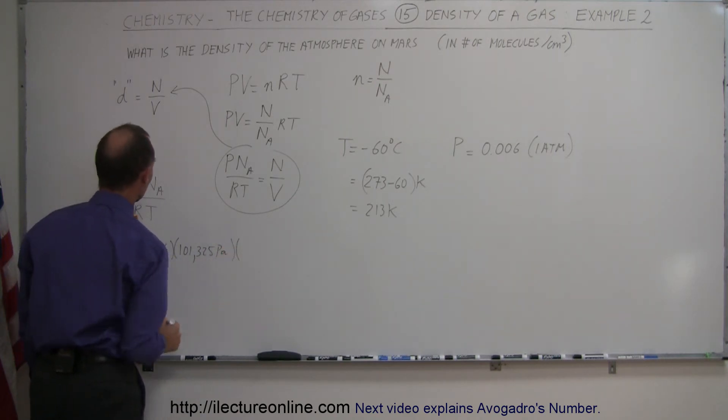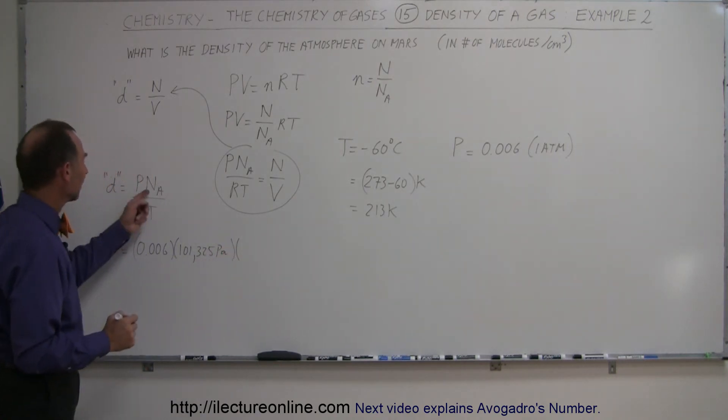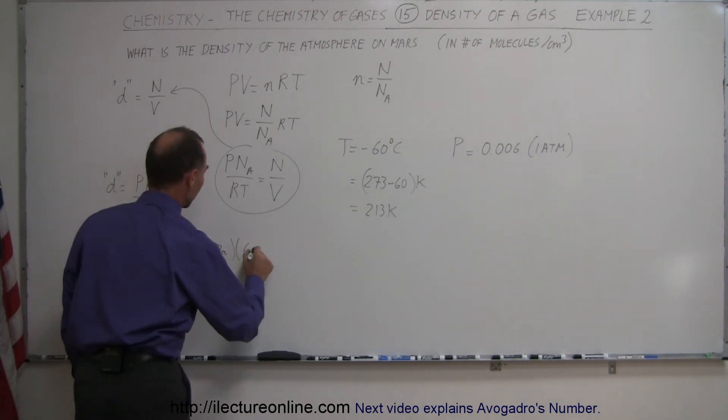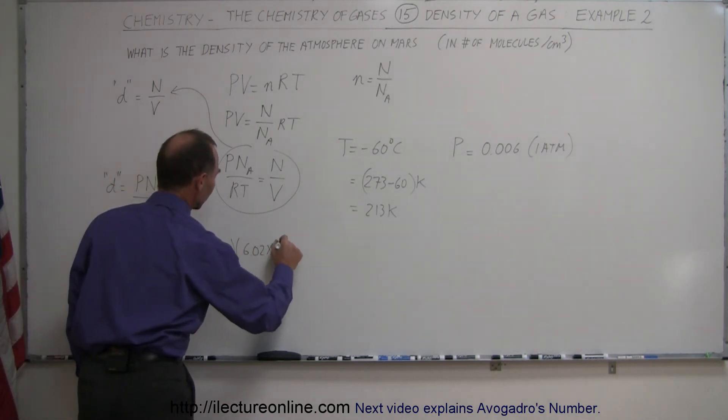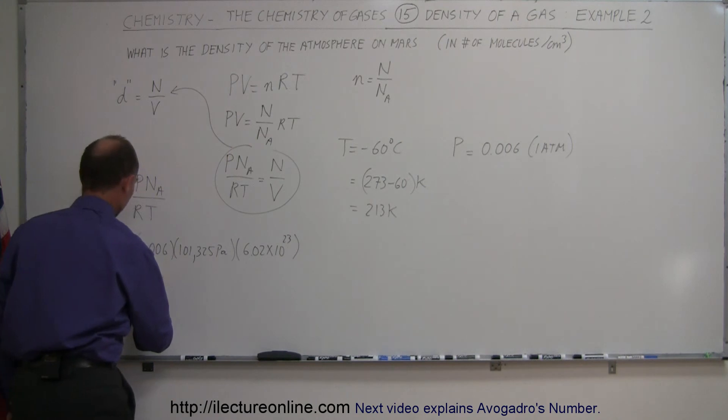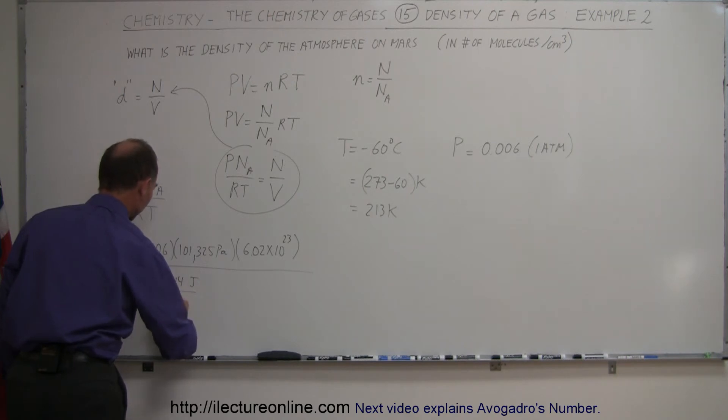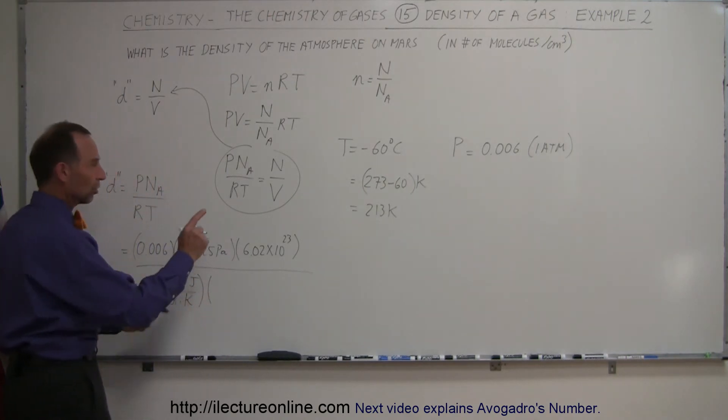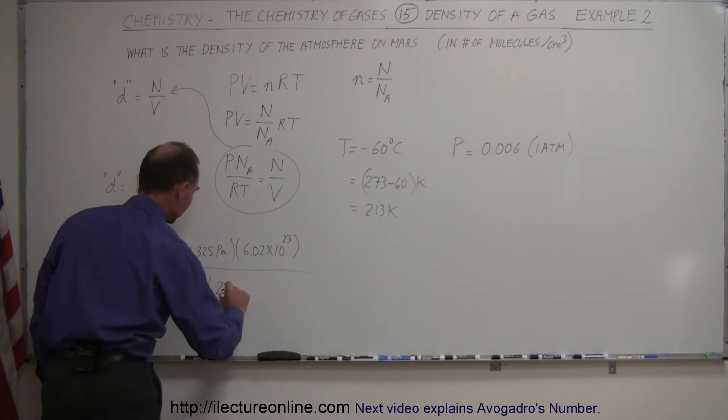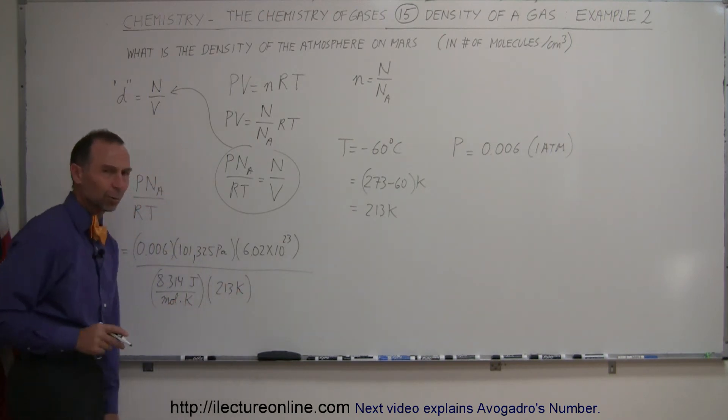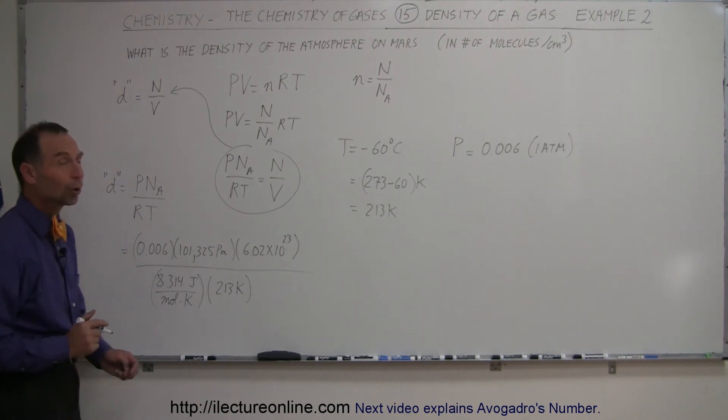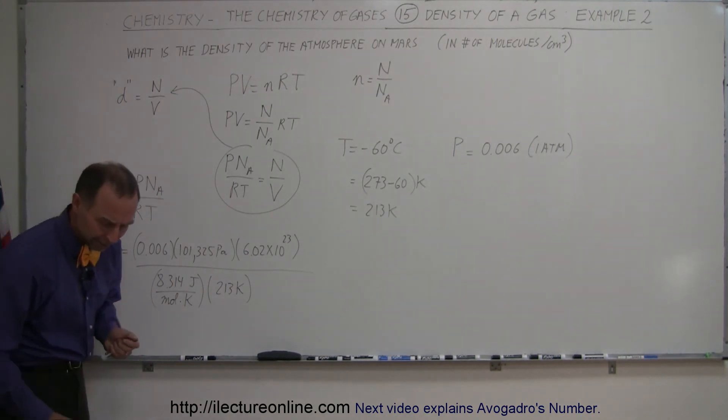Times the number of Avogadro, which is 6.02 times 10 to the 23rd, divide that by the gas constant, which is 8.314 joules per mole times Kelvin. And then we multiply times the temperature, which we estimate to be about 213 Kelvin. Of course, on a nice summer day, it's a little warmer than that on Mars, but it can get pretty cold. It can definitely get colder than that in the wintertime.